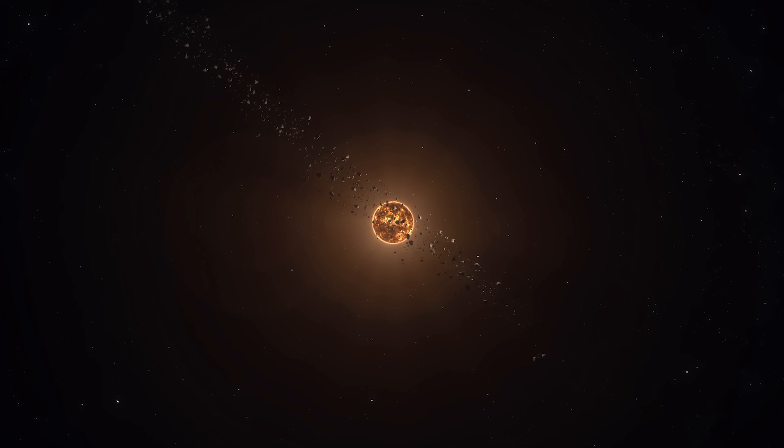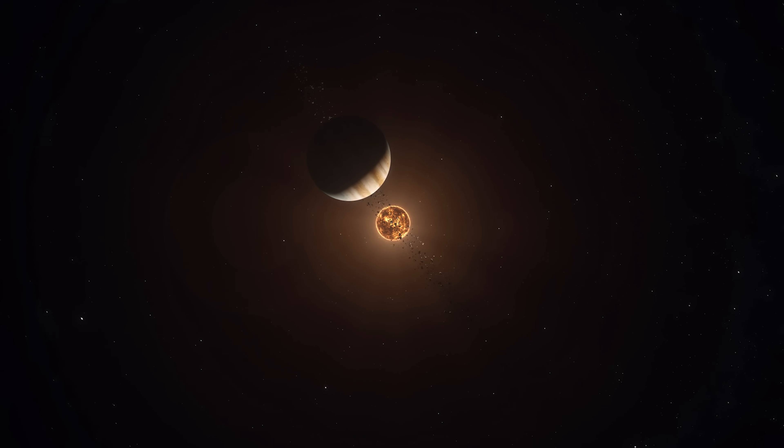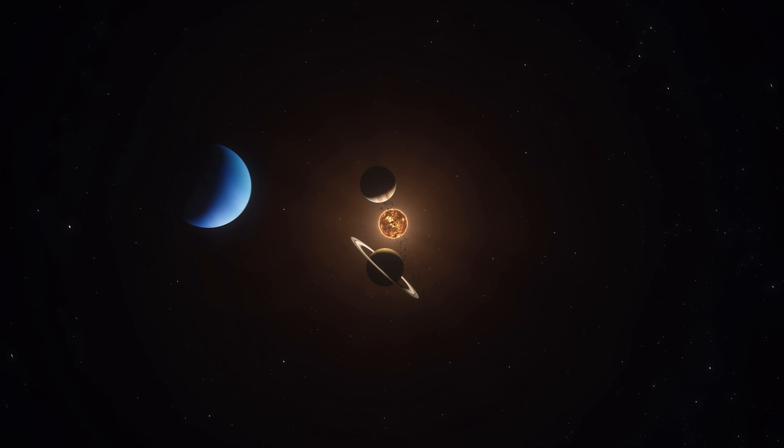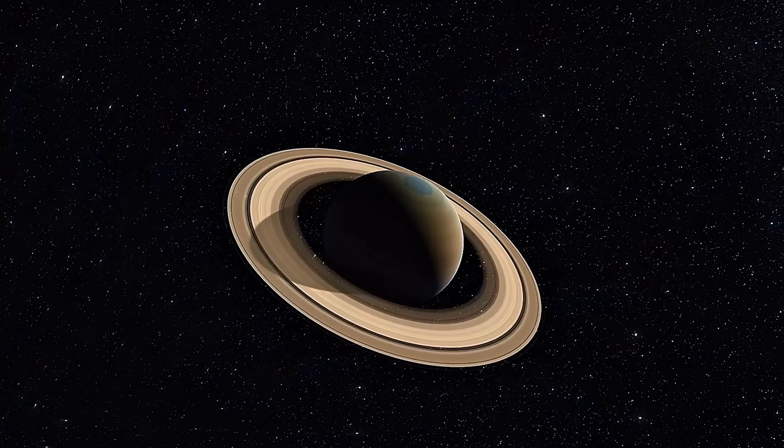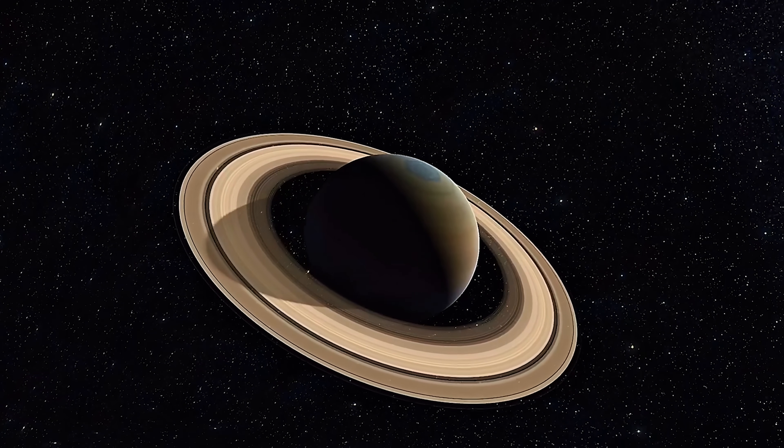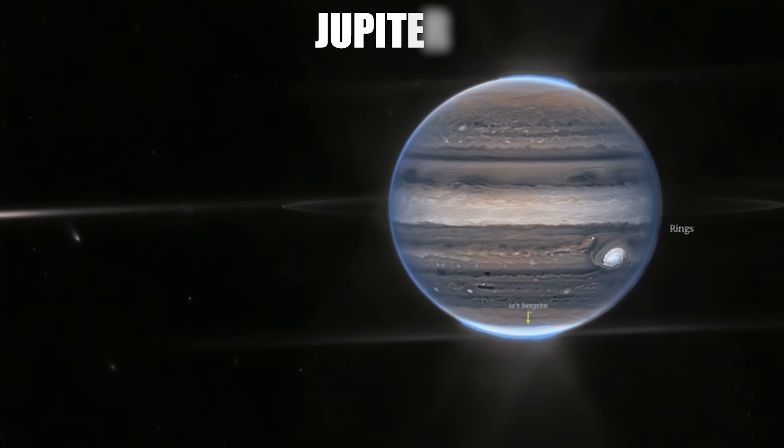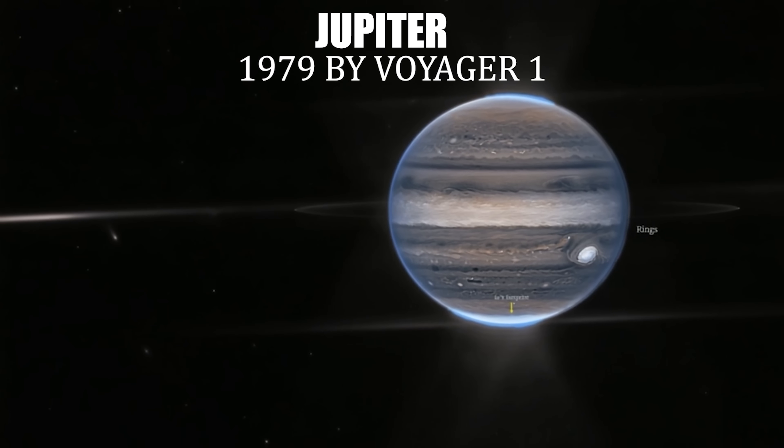But here's the surprise. All four gas giants, Jupiter, Saturn, Uranus, and Neptune, are surrounded by ring systems. Saturn is just the one that shows them off best, like a diva who knows how to pose for photos.